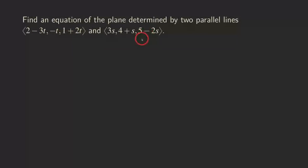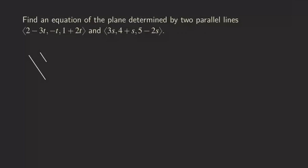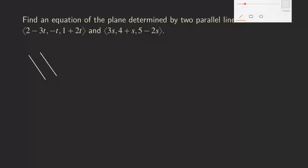So those two lines are parallel, and when two lines are parallel, we can actually have a plane passing through those two lines. So we have a plane — let me just draw the plane here.